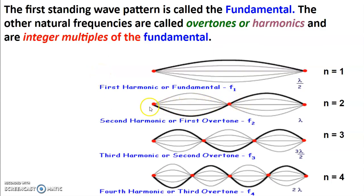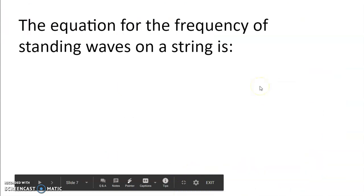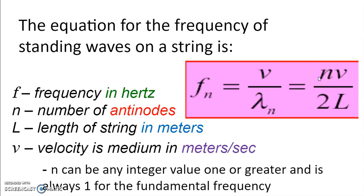The first standing wave pattern is the fundamental frequency and represents half a wavelength. The second harmonic contains a full wavelength, and the third harmonic contains one and a half wavelengths. To find the frequency of standing waves on a string, you need to know which harmonic you're on (n), the speed of the wave on the string, and the length of the string.